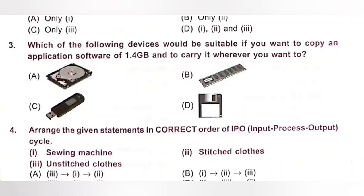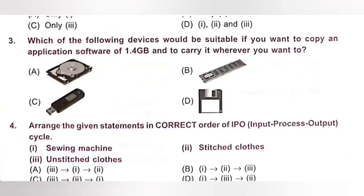Third one. Which of the following devices would be suitable if you want to copy an application software of 1.4 GB and carry it wherever you want to? Option A: Internal hard disk. B. RAM. C. Flash drive. D. Floppy disk.